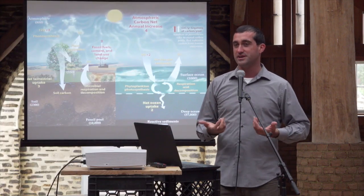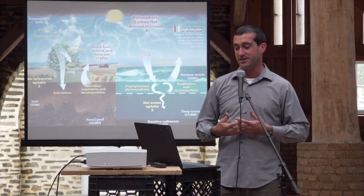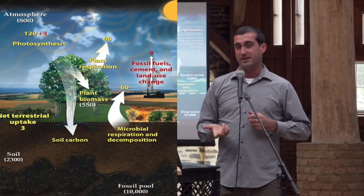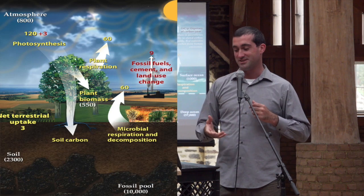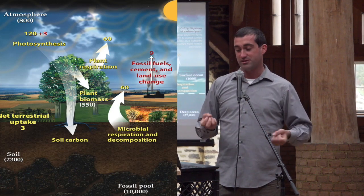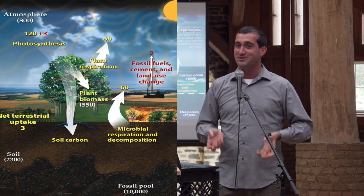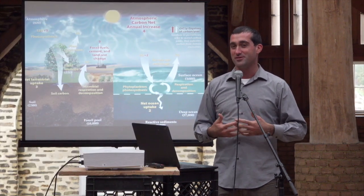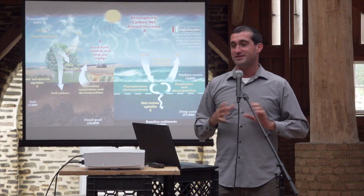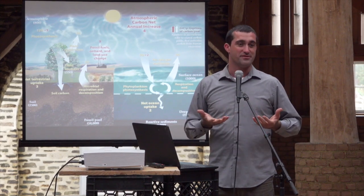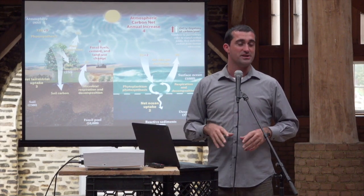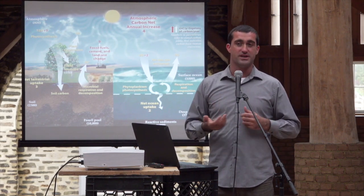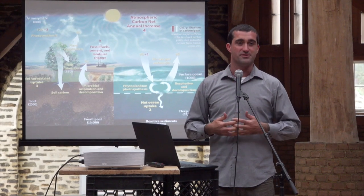The ocean is sequestering about 2 billion tons of carbon dioxide per year. On land, photosynthesis is bringing in about 123 billion tons per year, and then plant respiration and microbes are letting about 120 back out. We have a tremendous problem: 9 billion tons of carbon is going into the atmosphere each year, and the land and ocean is only bringing back 5 billion tons. So each year, 4 billion more tons of carbon dioxide are going into our atmosphere.